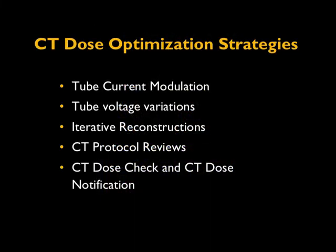In the next lecture, I will discuss various CT dose optimization strategies that have lowered or optimized radiation exposure from CT procedures. These strategies include tube current modulation, tube voltage selection, iterative reconstruction, and CT dose check and CT dose notification.